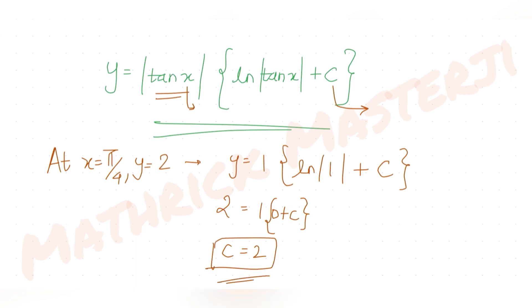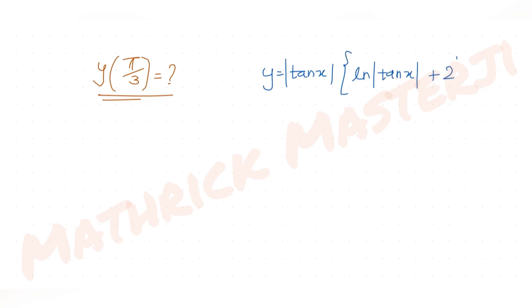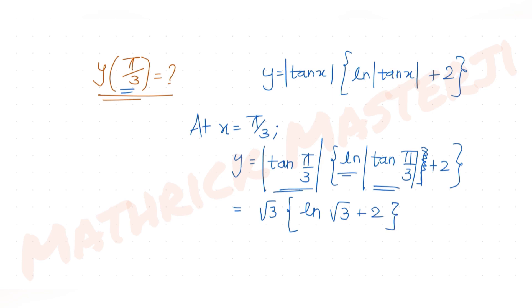Now I find y at x = π/3. The solution is y = |tan x| · (ln|tan x| + 2). At x = π/3, tan(π/3) = tan 60° = √3, so y = |√3| · (ln|√3| + 2) = √3 · (ln √3 + 2) = √3 · (2 + log √3 to base e).